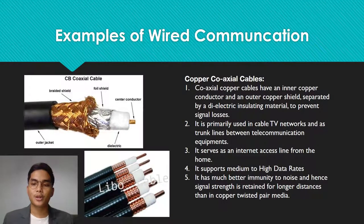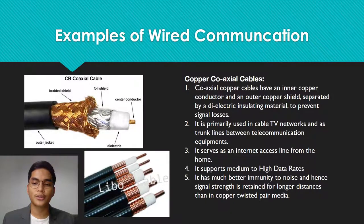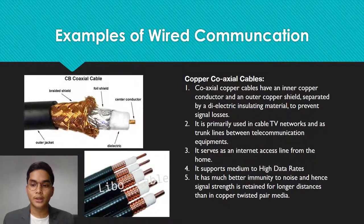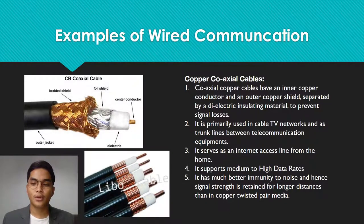The next example is copper coaxial cables. Coaxial copper cables have an inner copper conductor and an outer copper shield separated by electric insulating material to prevent signal loss. This is primarily used in cable TV networks and as trunk lines between telecommunication equipment. It serves as an internet access line from the home and supports medium to high data rates.